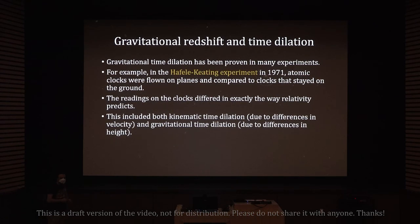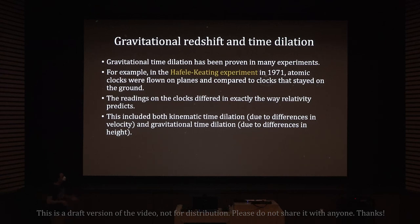An observer at a fixed altitude in space detects the light. The closer the clock is to the source of gravity, the more redshifted the light will be according to the observer. When light is redshifted, its wavelength gets longer, and since wavelength is inversely proportional to frequency, the frequency becomes slower. So the observer in space will see the clock tick at slower and slower frequencies the closer the clock is to the surface of the Earth.